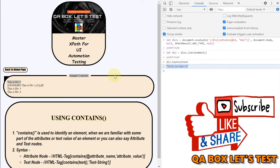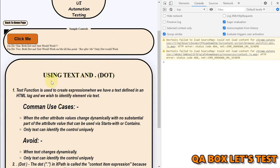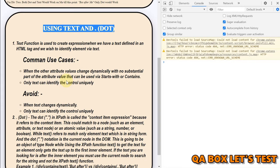Next thing that we have to do is we have to use text and dot. So again, this text function is used to create expression when we have a text defined in an HTML tag and we wish to identify element via text. That's very important. We are not working on attributes. Now we are working on text node.